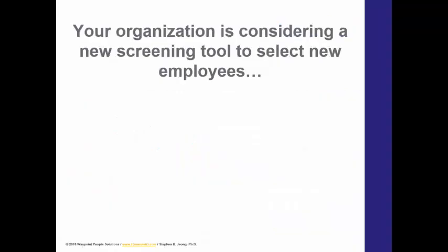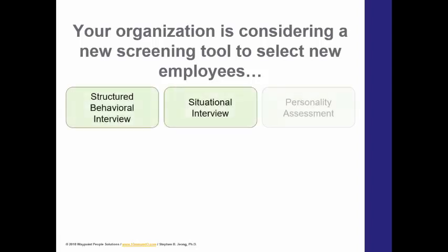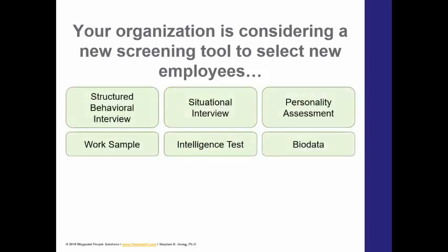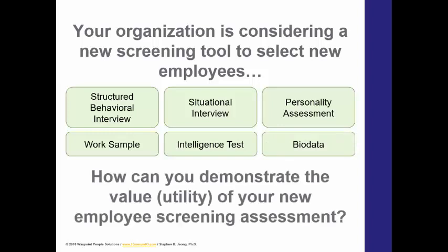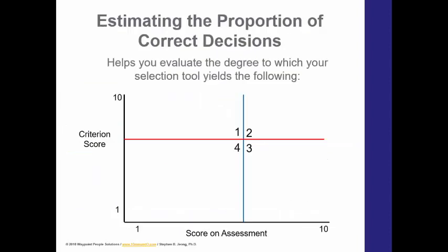Let's say your organization is considering the use of a new screening tool to select employees. This could be any one of these — personality assessment, intelligence test, bio data, and so on. The question is: how can you demonstrate the value in terms of accuracy of your new assessment? What we're going to be doing is estimating the proportion of correct decisions of your new assessment.